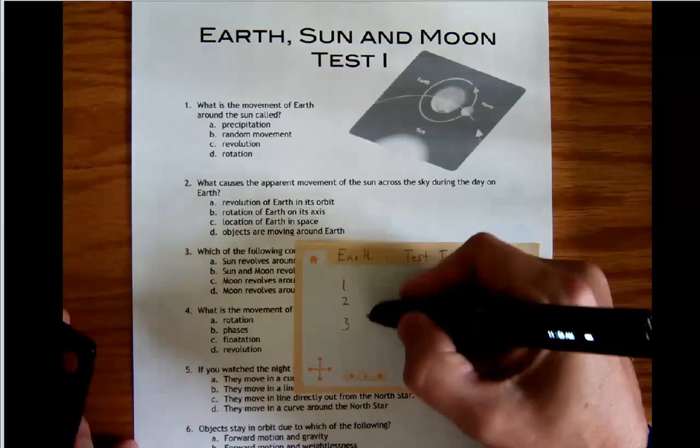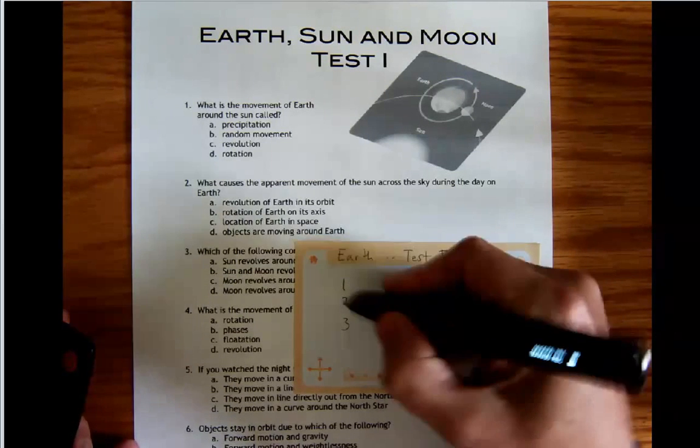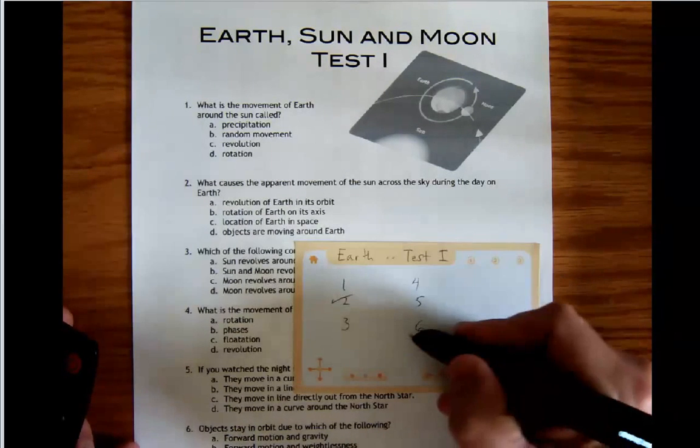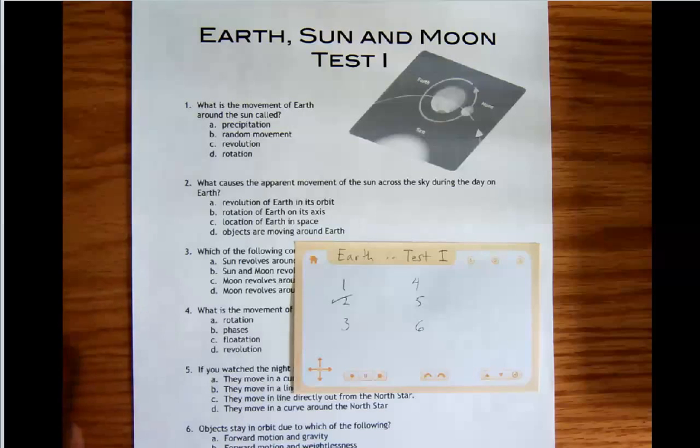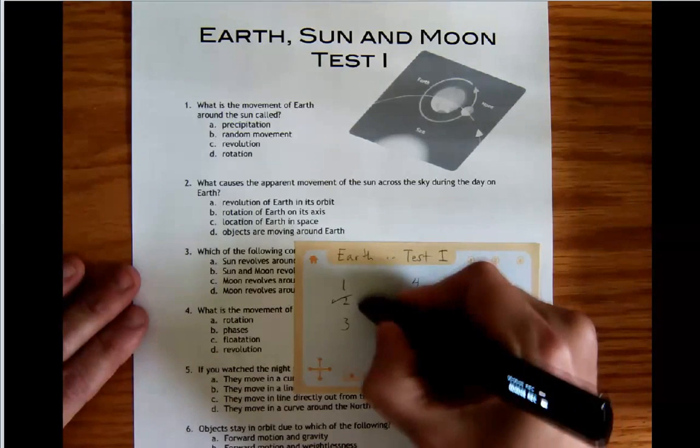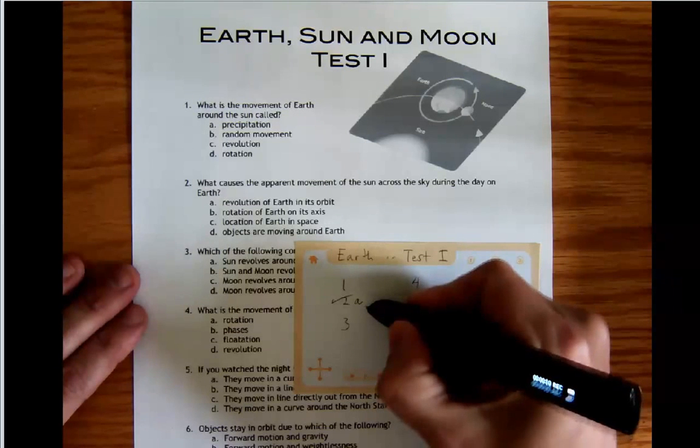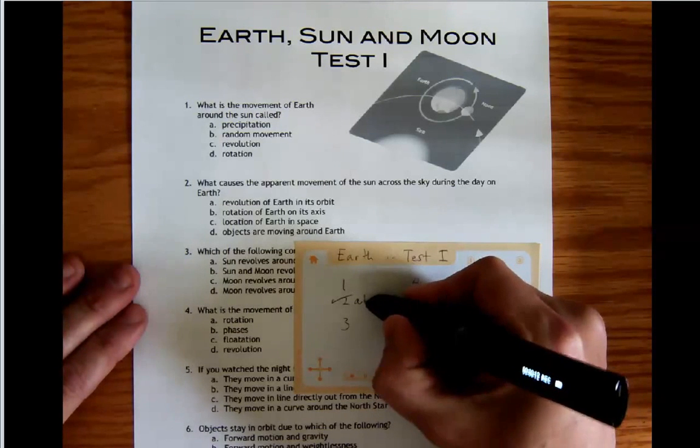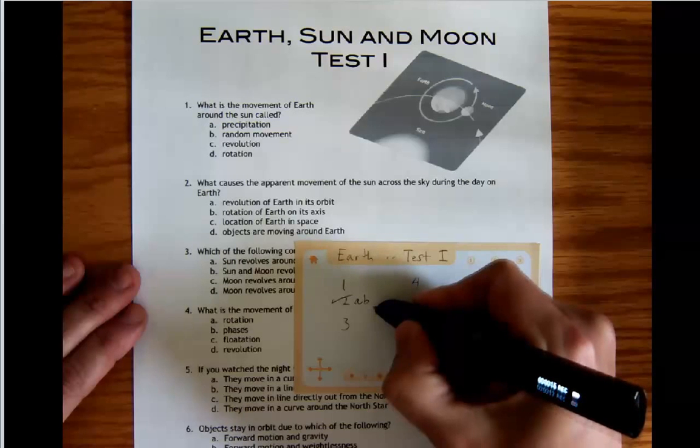So here goes for number two. Number two, what causes the apparent movement of the Sun across the sky during the day on Earth? Is it A, revolution of Earth in its orbit? B, rotation of Earth on its axis?